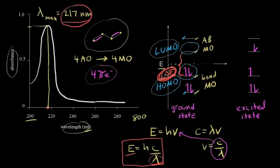The absorption spectrum shows a broad range of wavelengths being absorbed rather than one sharp line. This results from the different vibrations and rotations of the molecule, which slightly change the energy differences. So we don't see one exact wavelength; instead we see a broad band. What you do is look for the wavelength absorbed most strongly, and think of that as corresponding to the energy difference between the HOMO and LUMO.